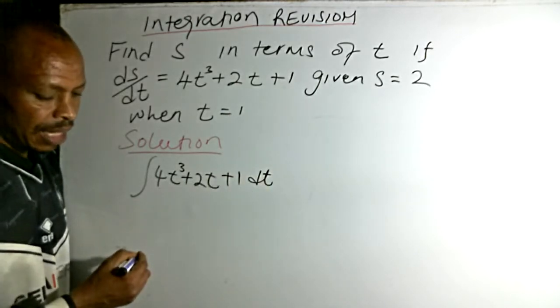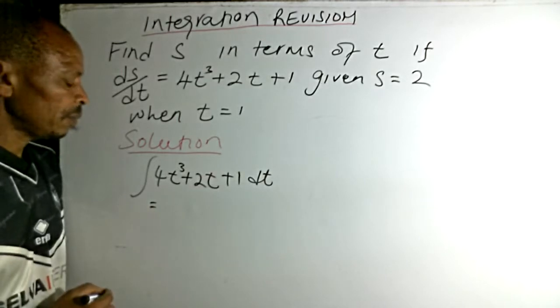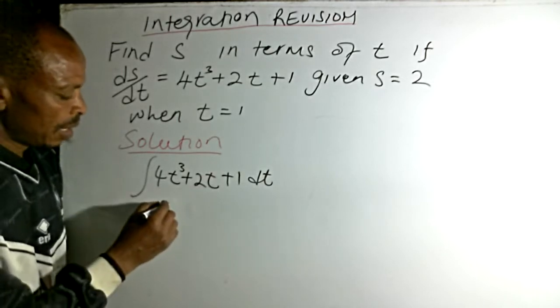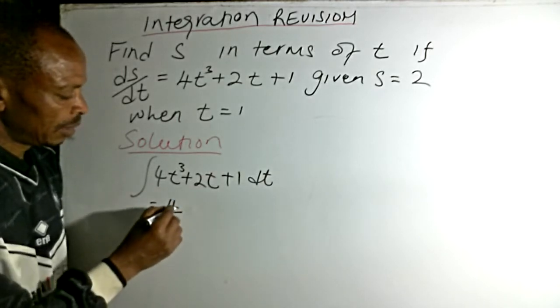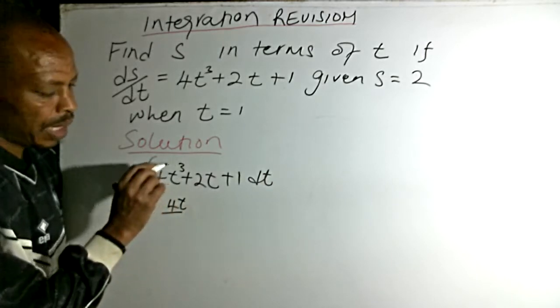When you integrate that you'll get: 4 over 4... we add 1 to 3 so we have 4t to the power 4 and we divide with our new index or power.